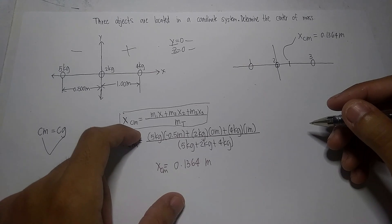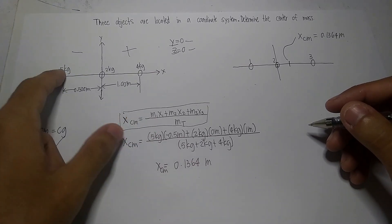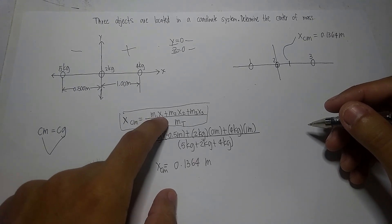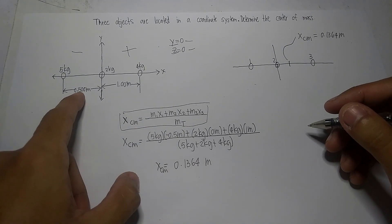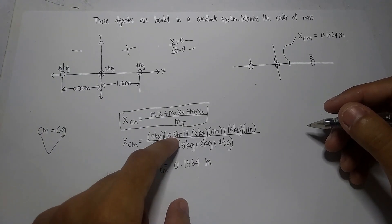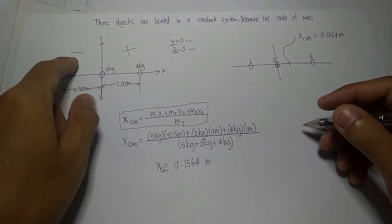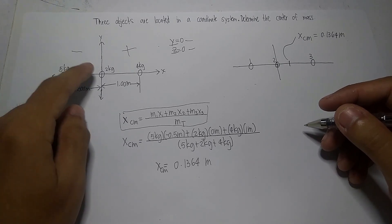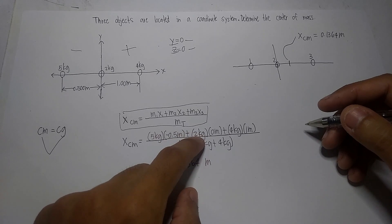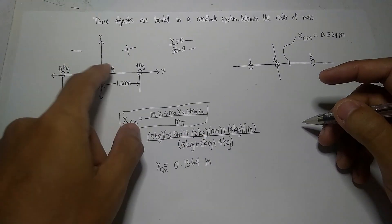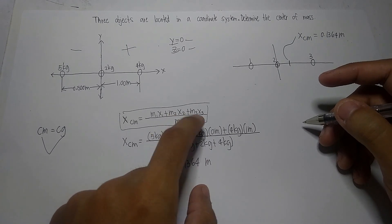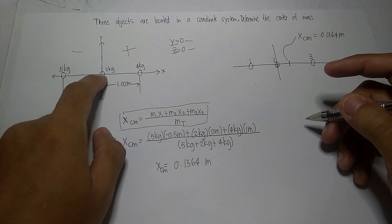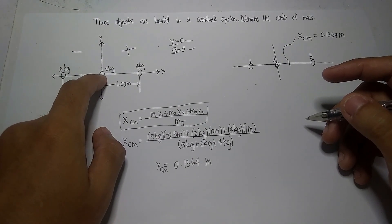Substituting the values given, we have the value of m sub 1 which is 5 kg. We know that the position is 0.500 meters. We will input negative 0.5 meters because it opposes the reference point. Then, we will substitute 2 kg because that's the mass of object 2 at 0 meters, which is x sub 2, because it is situated at the reference point.